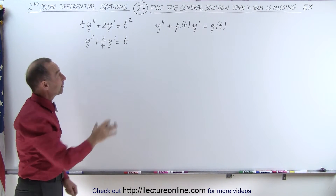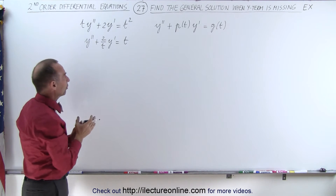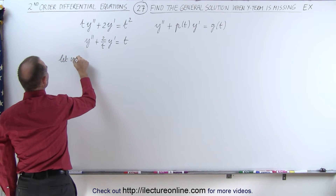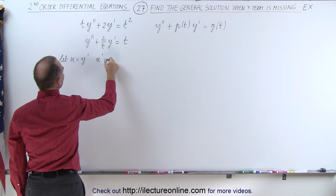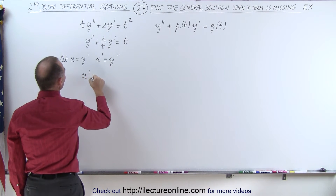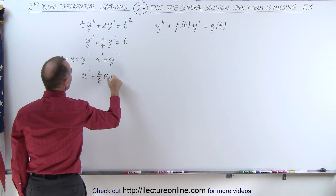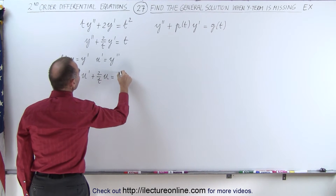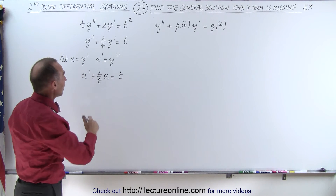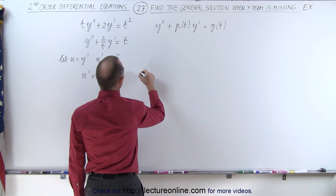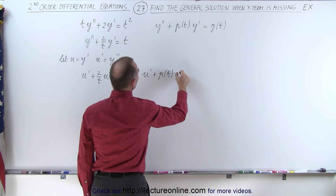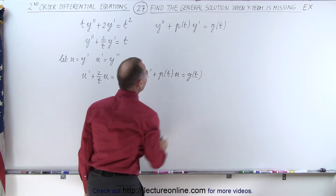Now that we have it in that format, we can do the substitution to turn this into a first order differential equation. We're going to let u equal y prime and u prime equal y double prime. So this equation now becomes u prime plus 2 over t times u is equal to t. Now we have a first order differential equation that looks as follows: u prime plus some function of t times u is equal to some other function of t.